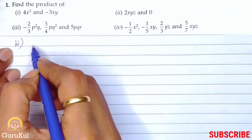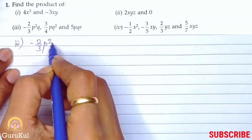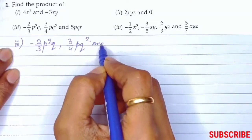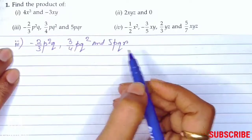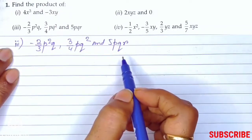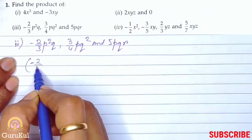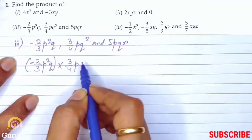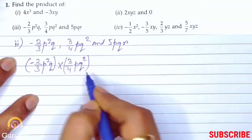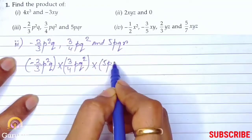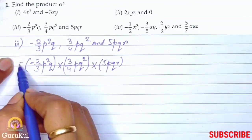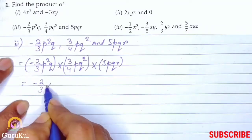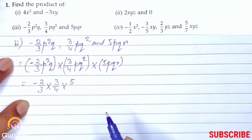Third one. It is minus 2 by 3 p square q, 3 by 4 pq square, and 5pqr. Now we have to multiply: minus 2 by 3 p square q bracket into 3 by 4 pq square into 5pqr. So we have to multiply this.